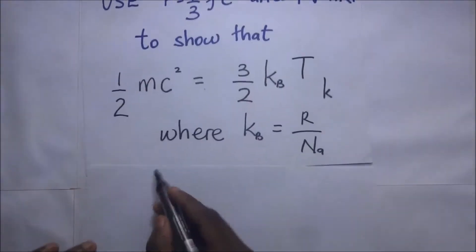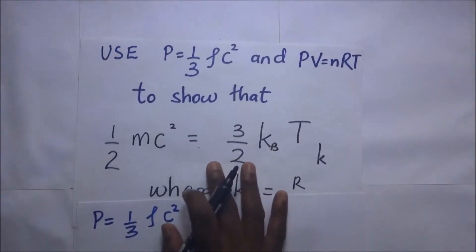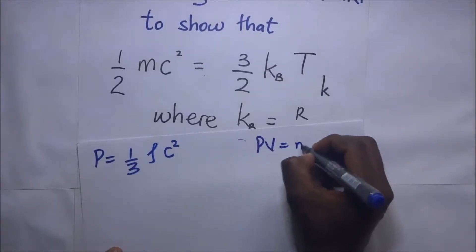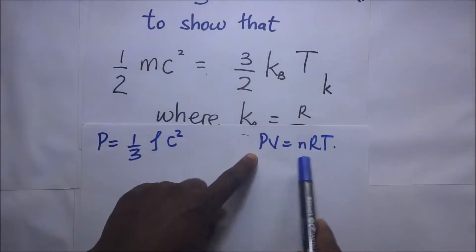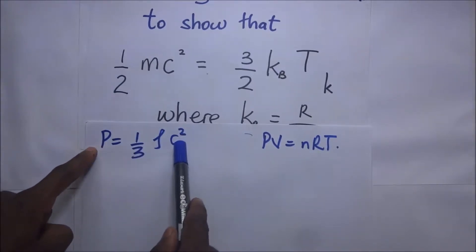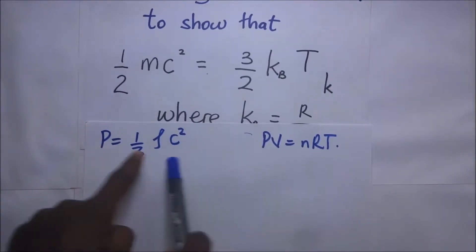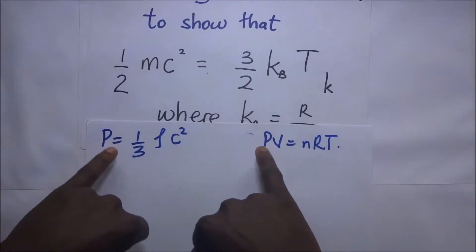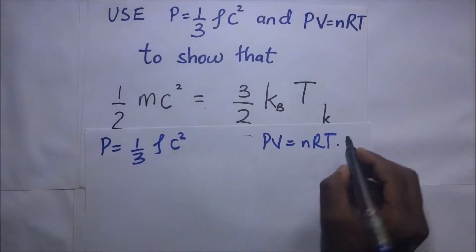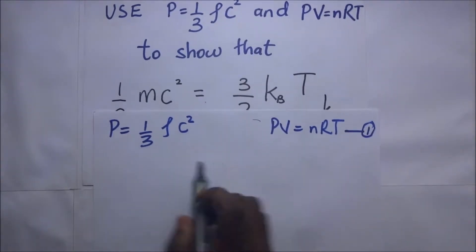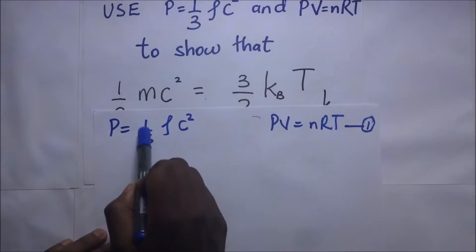I have two expressions to use: P = ⅓ρC², and the ideal gas equation PV = nRT. I'll treat PV = nRT as equation 1. If I can rearrange the kinetic pressure expression to also make PV the subject, and then equate the two PV expressions, I'll be able to arrive at the conclusion. So that's the route I'm going to take.